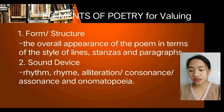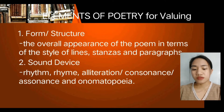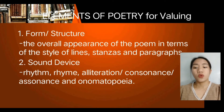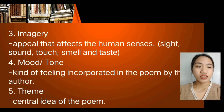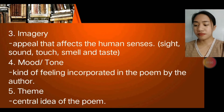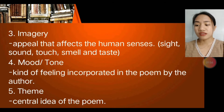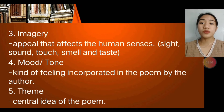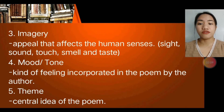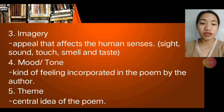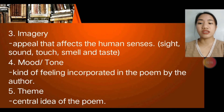The next element is the sound device. The sound devices of poems are rhythm, rhyme, alliteration, consonance, assonance, and onomatopoeia. Next is imagery — words that appeal to the reader's senses of sight, sound, touch, taste, and smell. The fourth is mood or tone, which is the feeling the author chooses to give in the poem. And lastly, the theme — the main central idea of the poem.